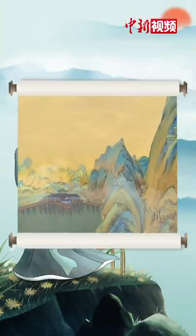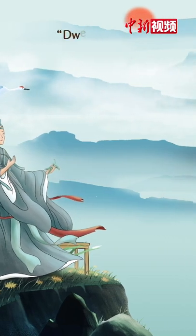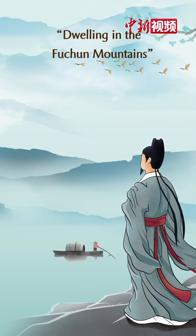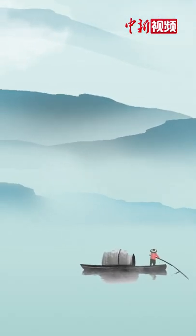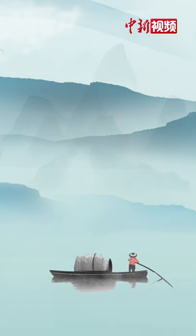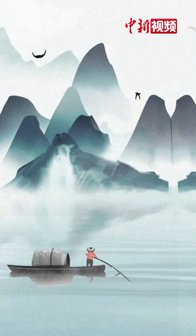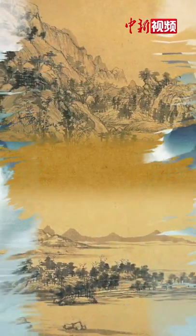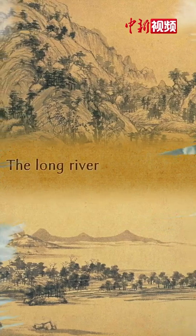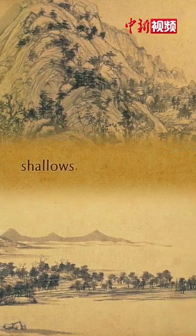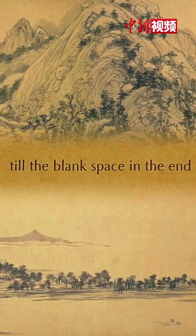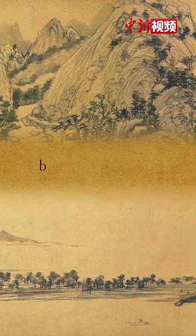If the previous painting is about the ambitions of the young, then this one is full of insights in the painter's late years. Huang Gong Wang had been through ups and downs and collected the changes of life and nature within his stroke. It took him seven years to finish this painting. The long river flows through shallows, wrapped eyes, peaks till the blank space in the end, representing the background of life.